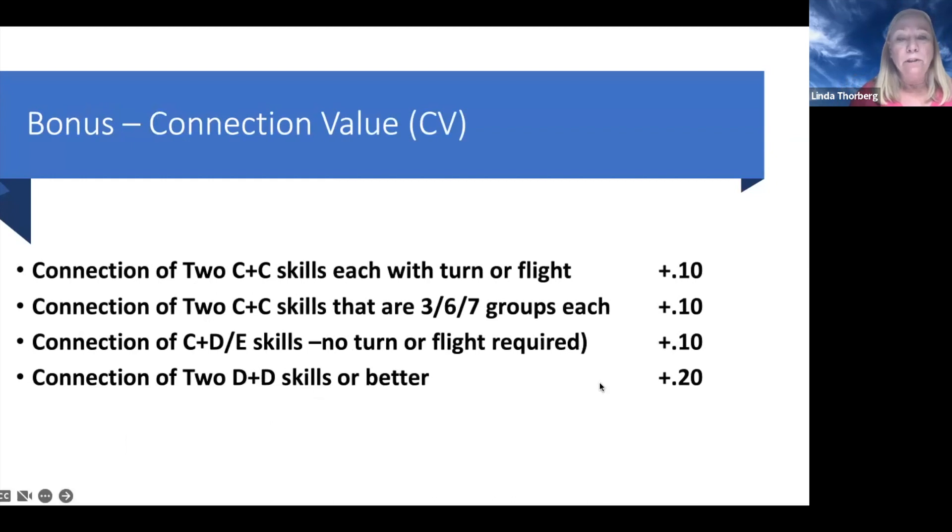Let's talk about other bonus. If you have two C skills and they each have to have turn or flight, you can get plus one. If you connect two C skills and they are three, six, seven groups, your clear hips, your toe-ons, your stalders, and they don't have to have a turn or flight, you can get plus one. Or if you connect a C plus D or a C plus E connection, no turn or flight required in the D's or E's, you can get plus one. But then you have to have two D's to get the plus two. And D's, it doesn't matter if they have turn or flight.